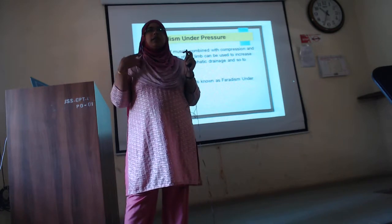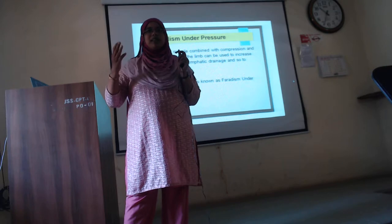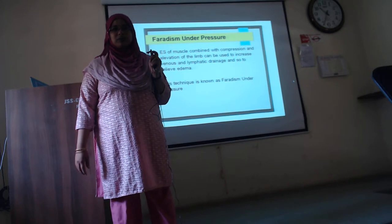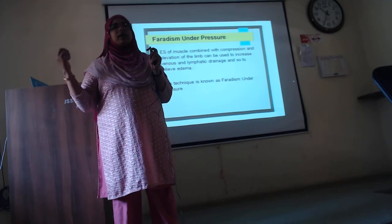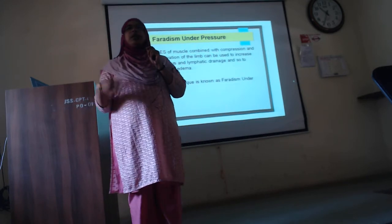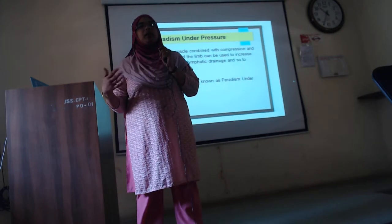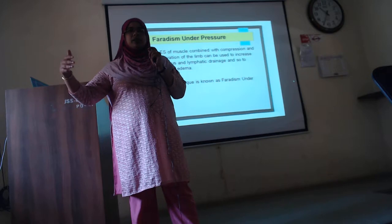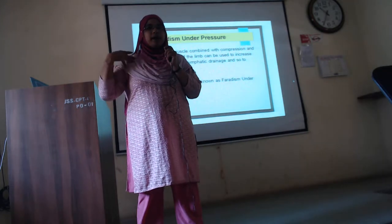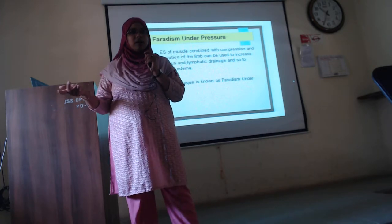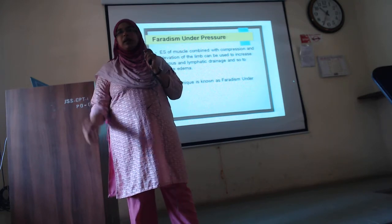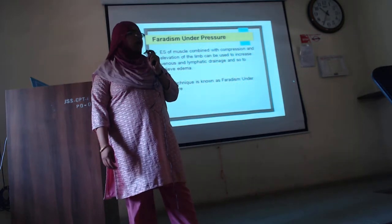Edema can occur in the lower or upper limb due to various reasons. A common indication is post-mastectomy lymphedema — mastectomy is removal of the breast, and the axillary lymph nodes are also removed. That person is prone to developing lymphedema of the upper limb on the affected side. The blood is not flowing properly and because the axillary lymph nodes are removed, venous stasis occurs. Lower limb edema can occur due to lymphatic problems or other causes.